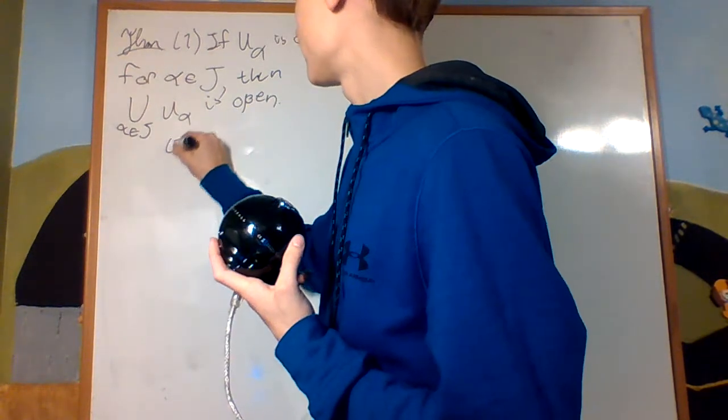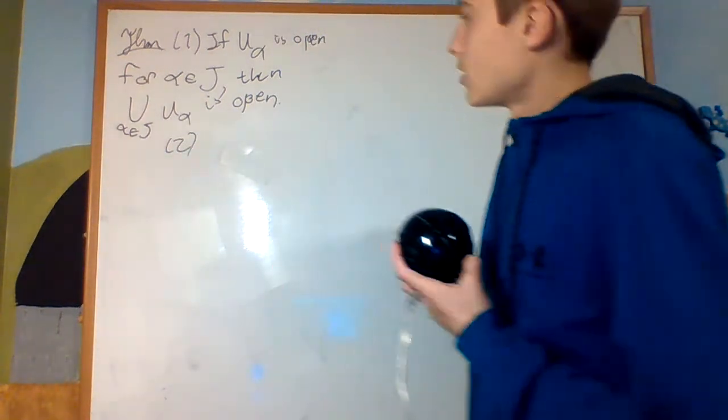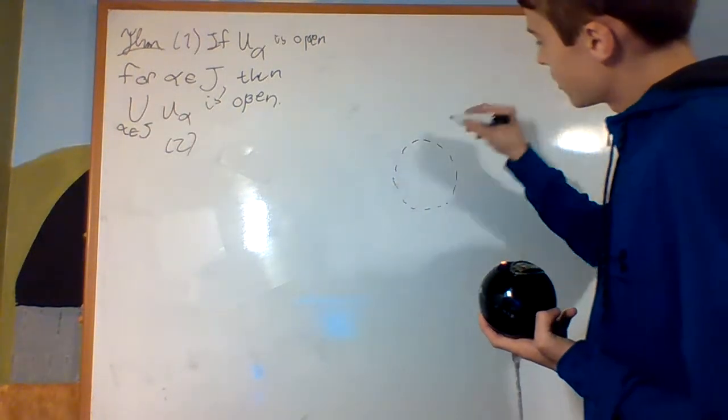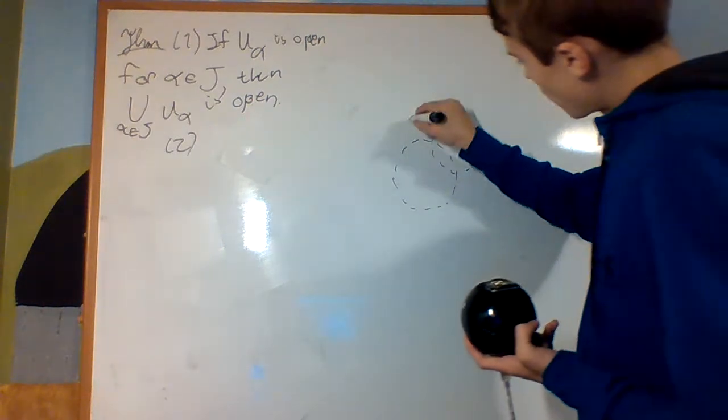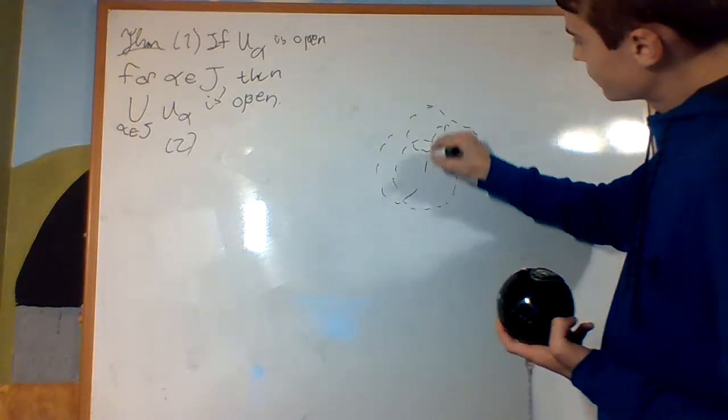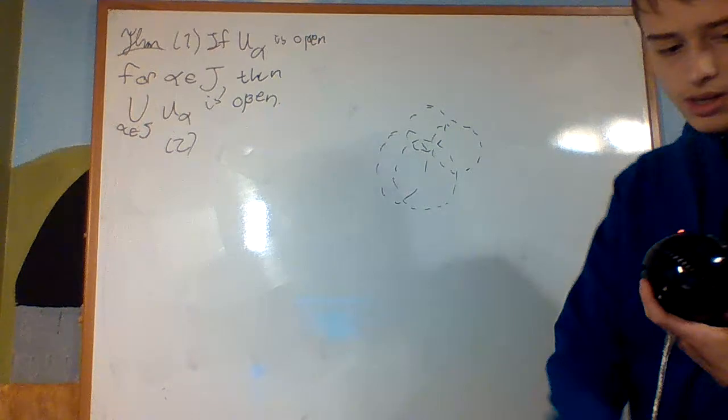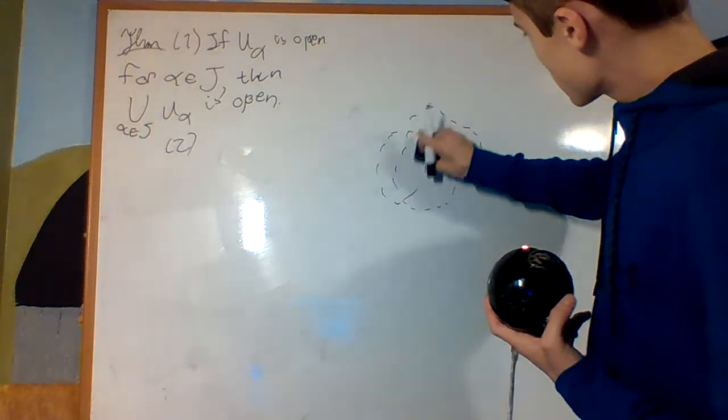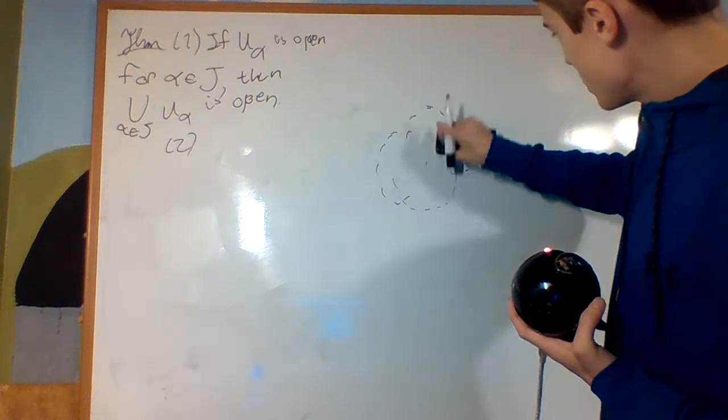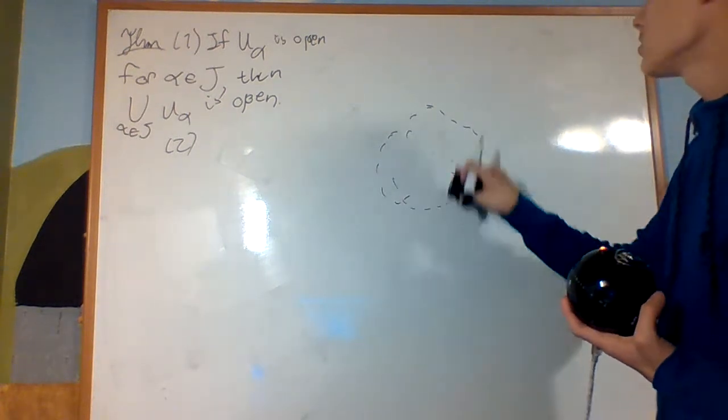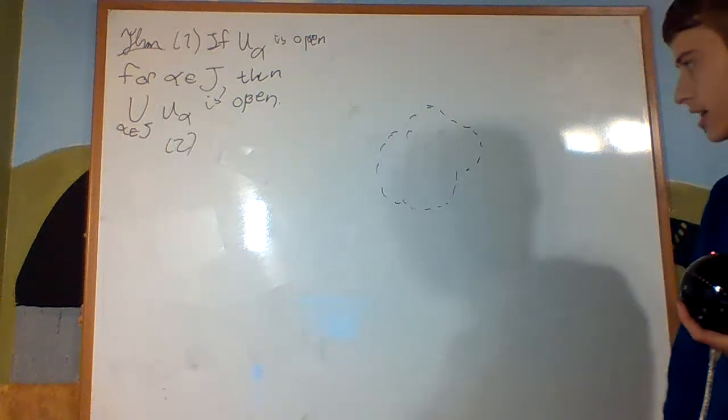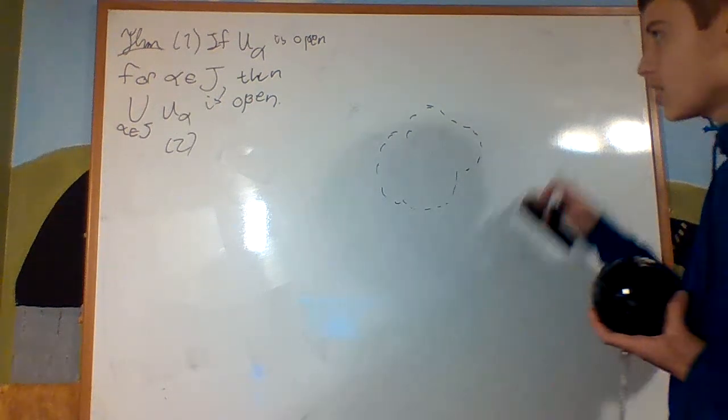Two. So it's closed under arbitrary unions. Why would that be? Well, if I have a bunch of open sets, I'm going to do a finite amount, and I just union all of them together to get this big amalgamation of all of them. So it still is open. It still does not contain the boundary, intuitively.